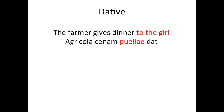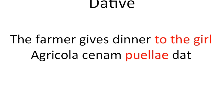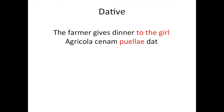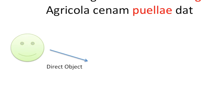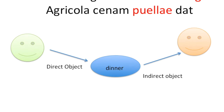Now let's take a look at the dative case, which is similar to the accusative case because it is the object of the sentence. However, it is the indirect object. For example: 'The farmer gives dinner to the girl,' or 'agricola cenam puellae dat.' The dative case can be translated as 'to' or 'for.' The dinner is the direct object, and 'to the girl' or 'for the girl' is the indirect object.